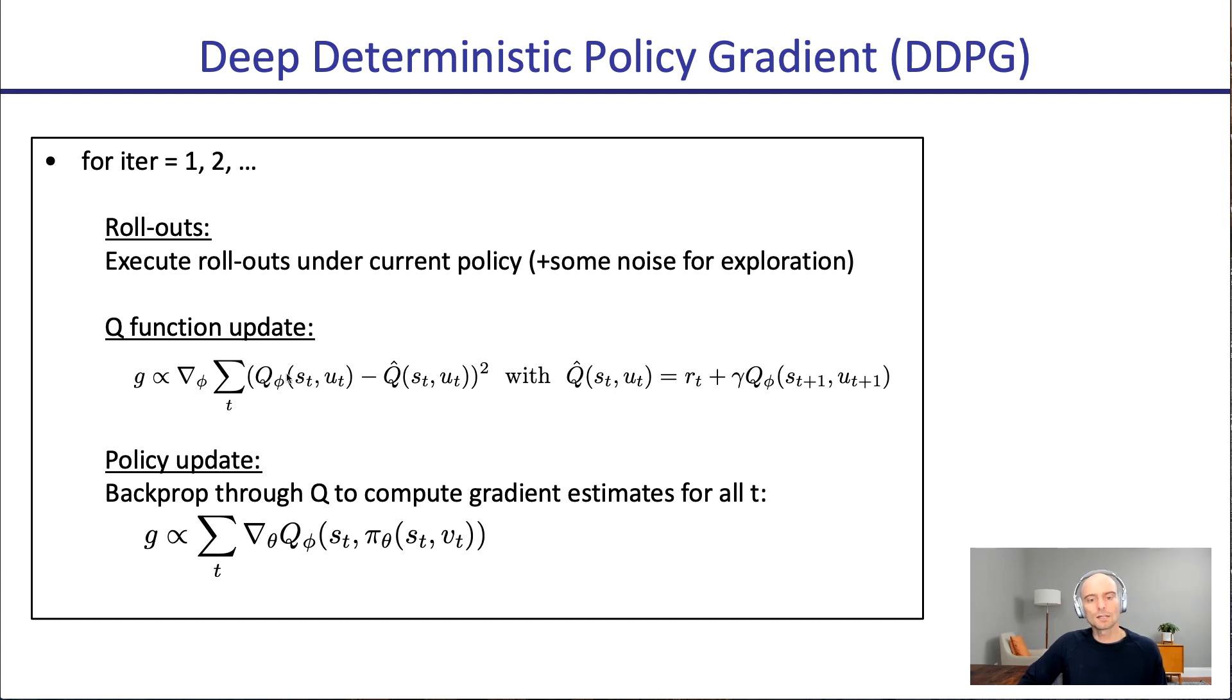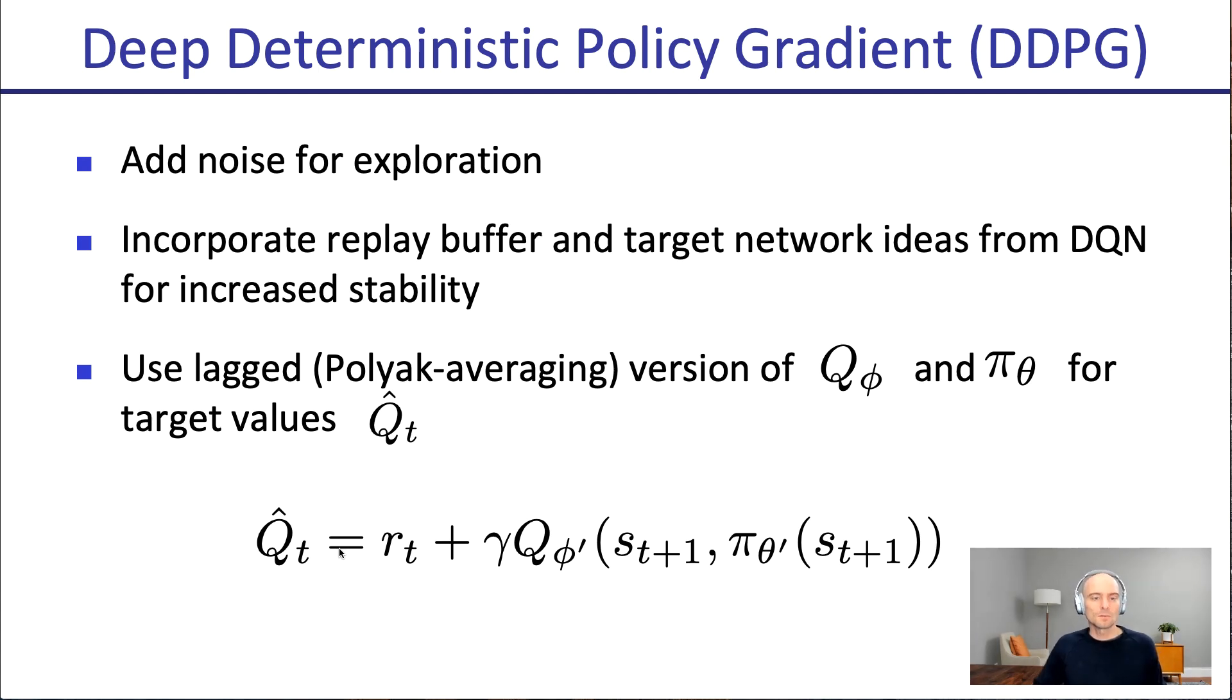And then you repeat. So more rollouts, use the data to further improve your Q function estimate, and then update your policy such that it maximizes Q value at the states in your replay buffer. There are a couple of extra things. If, especially if your policy is deterministic, you want to add noise to ensure there's exploration. Replay buffer and target network ideas from DQN increase stability. And often people use some lagged or Polyak averaging version of Q phi and pi theta for the target values of Q hat. So when you have the target values, just like in DQN, you use an older version of your Q function to stabilize things so it doesn't hop around too quickly.